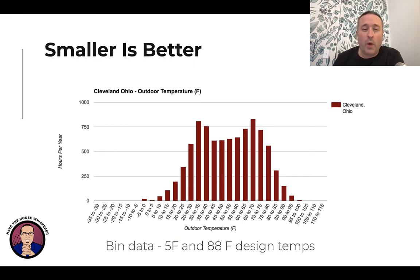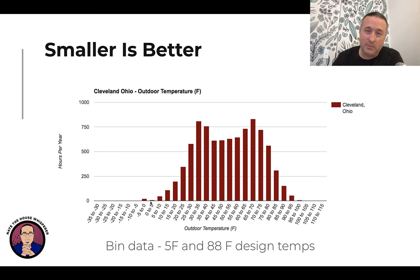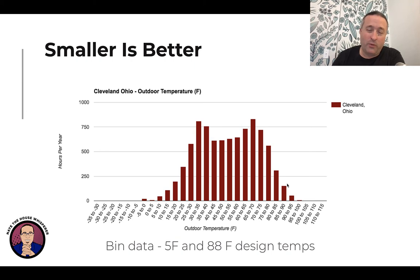Smaller is better — let's look at some numbers. This is bin data: how many hours Cleveland, Ohio spends in various temperature bins. On the low side you can see minus five to zero Fahrenheit, but note that the fat part of the curve is between 25 and about 80 degrees — that's where we spend most of our time. Design temperature is five or six degrees, and look at how much of the year we actually spend at design: not that much. Summer design is 86 or 88 degrees — it really doesn't happen for long.